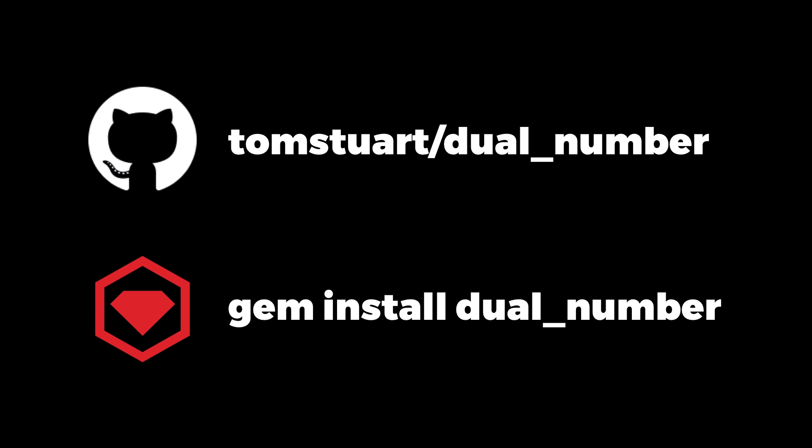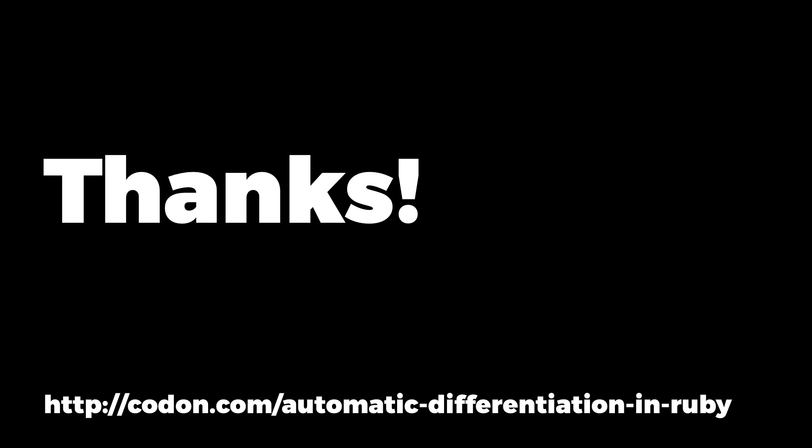So that's it. A clever little trick that works by inventing a new kind of number, defining operations on it that preserve its meaning, and passing it into existing functions to see what they do to it. The Ruby dual number implementation I built for this video is up on GitHub, or you can install it as a gem if you want to play around with it. Thanks very much.